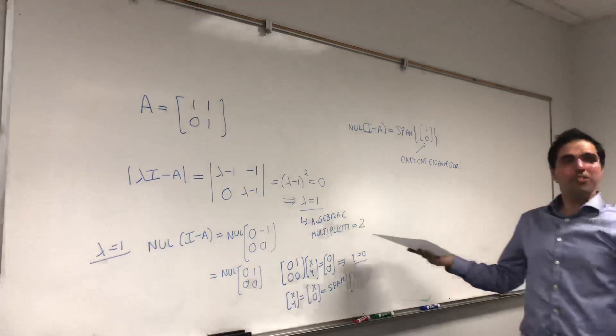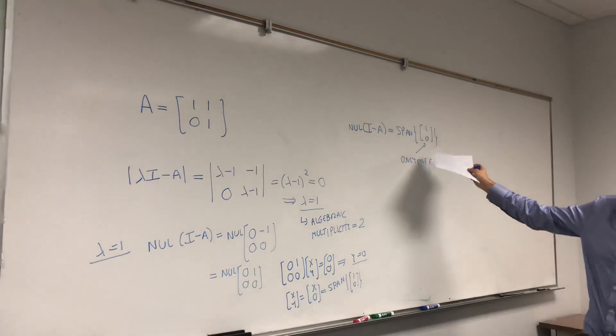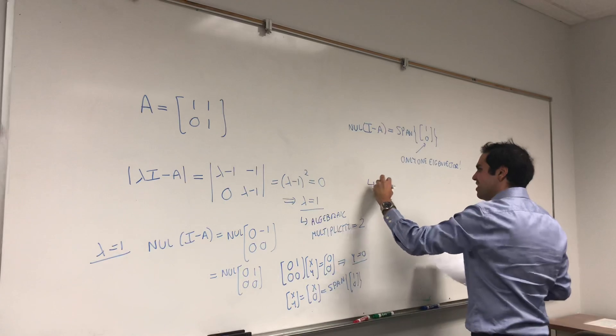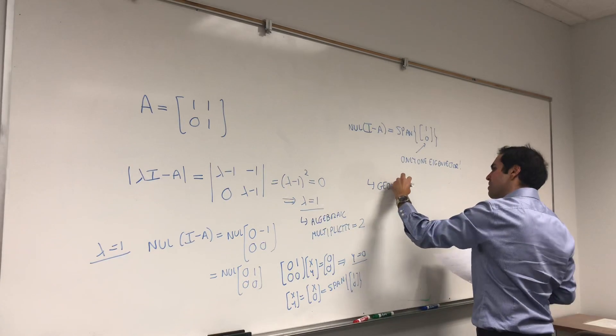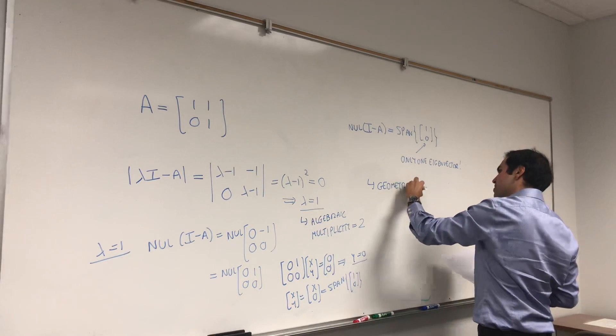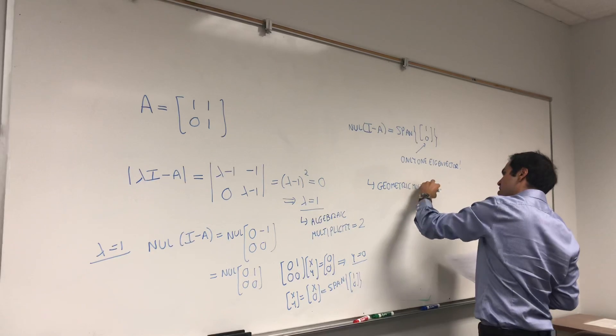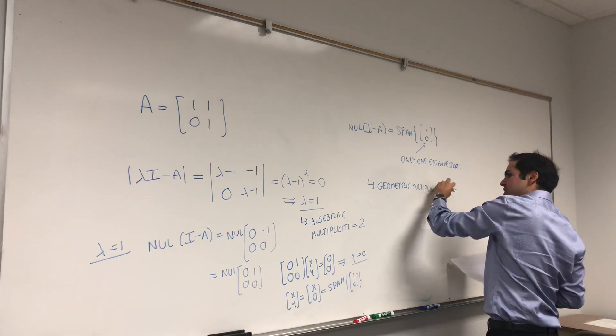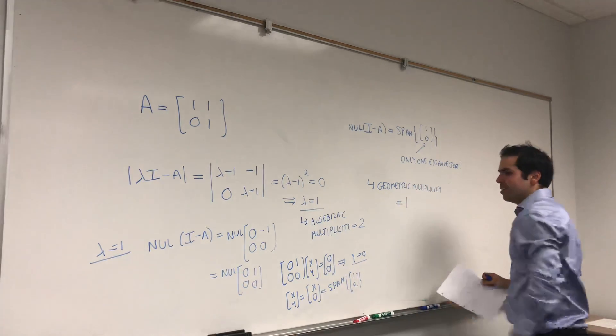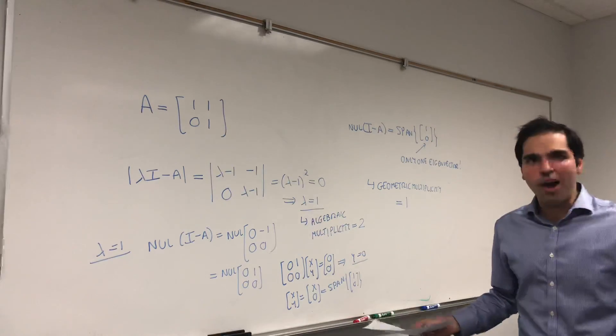So null of I minus A is just the span of one thing, and this is just only one eigenvector. In other words, in terms of multiplicity, this is called the geometric multiplicity. So here the geometric multiplicity is equal to 1.